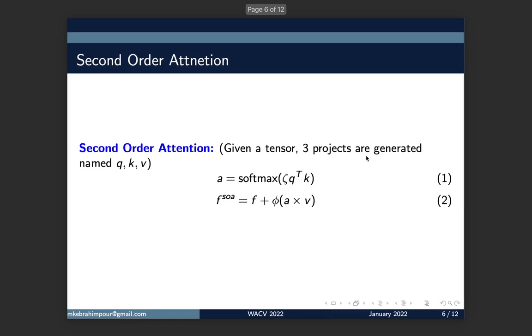Here is how the second-order attention mechanism works. Given a tensor, we have three projections named query, key, and value. The relationship between query and key is important here. The inner products of them are computed and a softmax function is applied on top of that. We have some weights showing us the relationship between query and key. By multiplying this attention to the third projection and adding the original tensor to that, we get the second-order attention enhancement that we want.